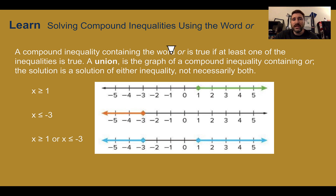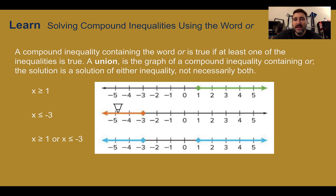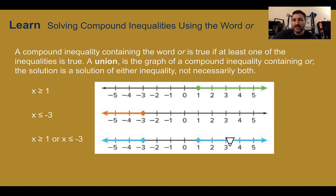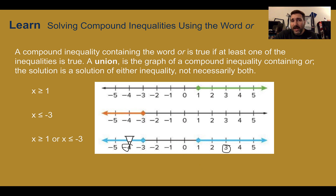If we look at our graphs: we have x is greater than or equal to 1 — this graph — or x is less than or equal to negative 3 — this graph. For our union, as long as our answer falls somewhere on the line for either of them, we're good. So if the answer was 3, we're good. If someone wanted to use negative 4, we're good. But if someone wanted to use negative 1, it doesn't work because it doesn't fit either of the inequalities.